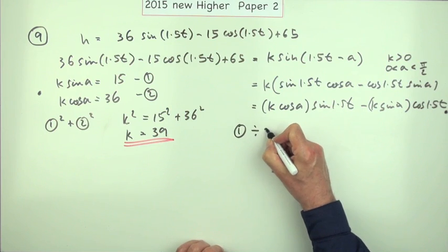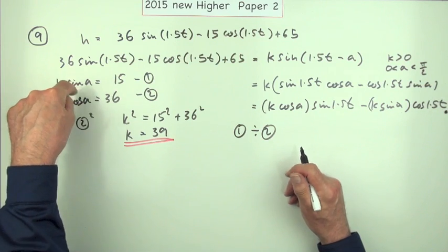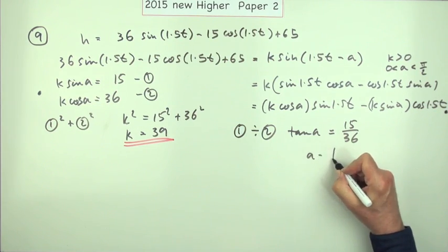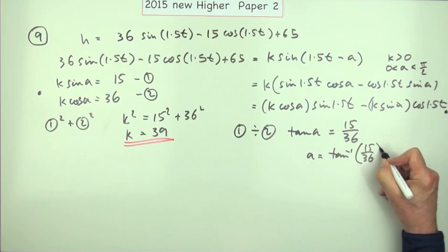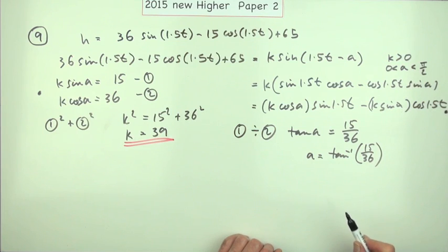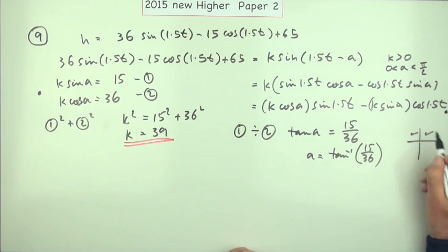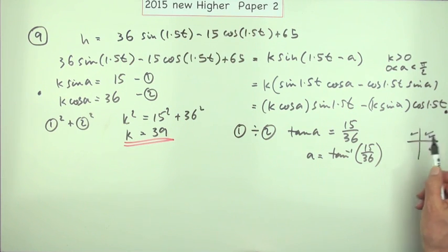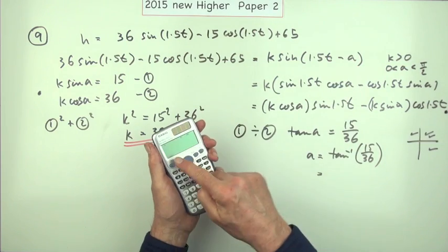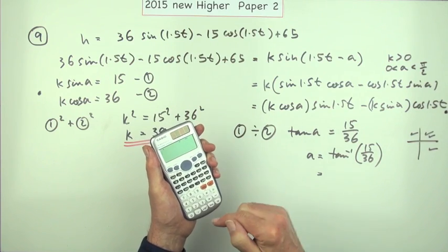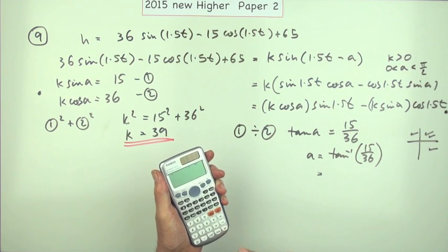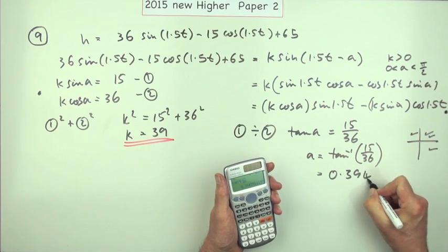If you divide equation 1 by equation 2, the K's cancel and you get sin over cos, which makes tan A = 15 over 36. So A is the inverse tan of 15/36. It's stated that A is an acute angle — you can check: sine is positive so it's first or second quadrant; cosine is positive so it's first or fourth. Both positive only in the first quadrant, so it should be acute. Set your calculator to radians — shift setup, pick 4, or whatever it is — then inverse tan of 15/36 gives 0.39479... The usual convention with radians is to take it to three decimal places.